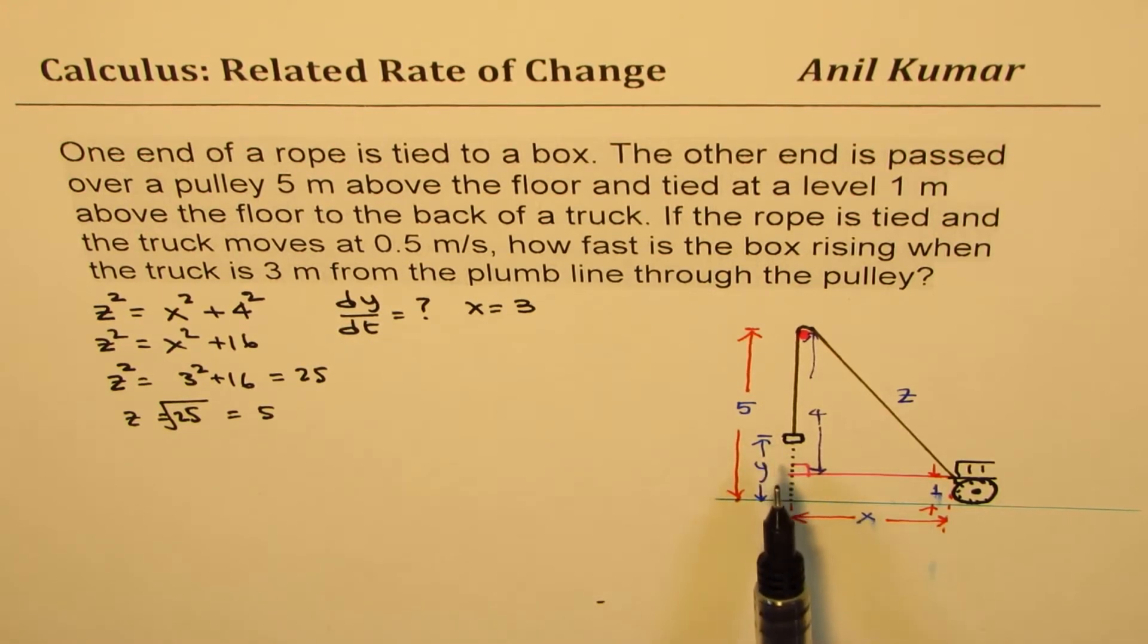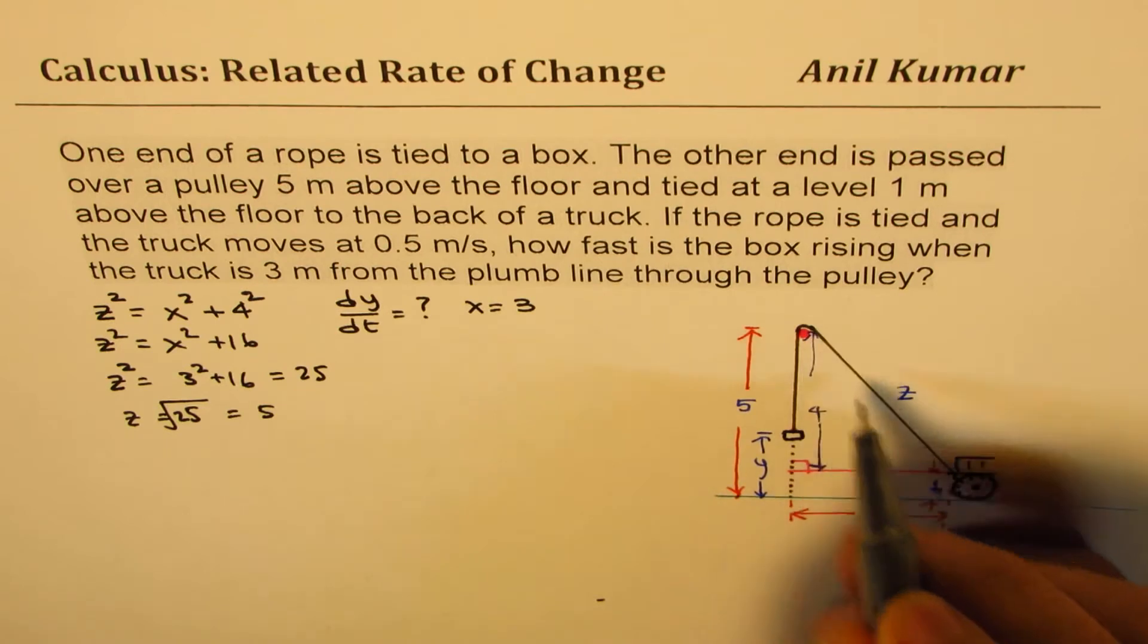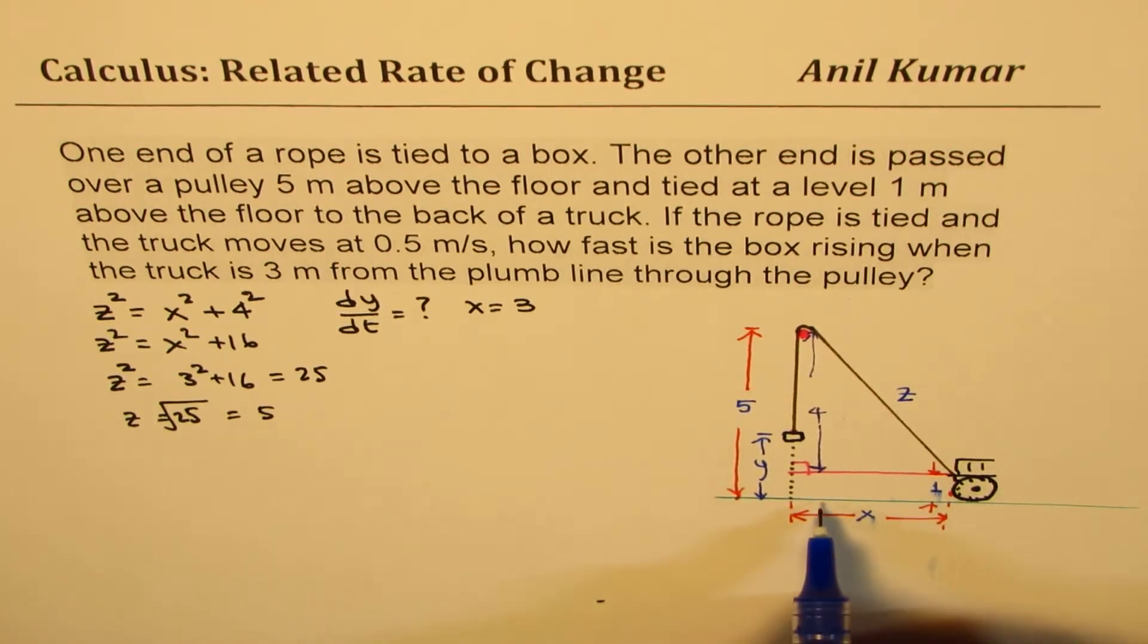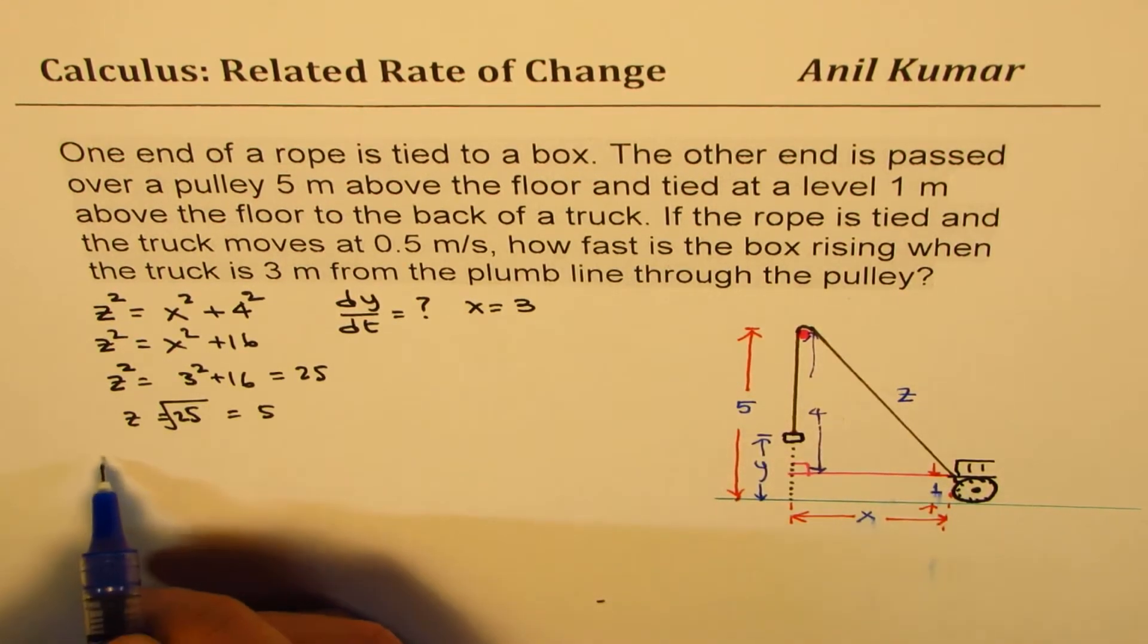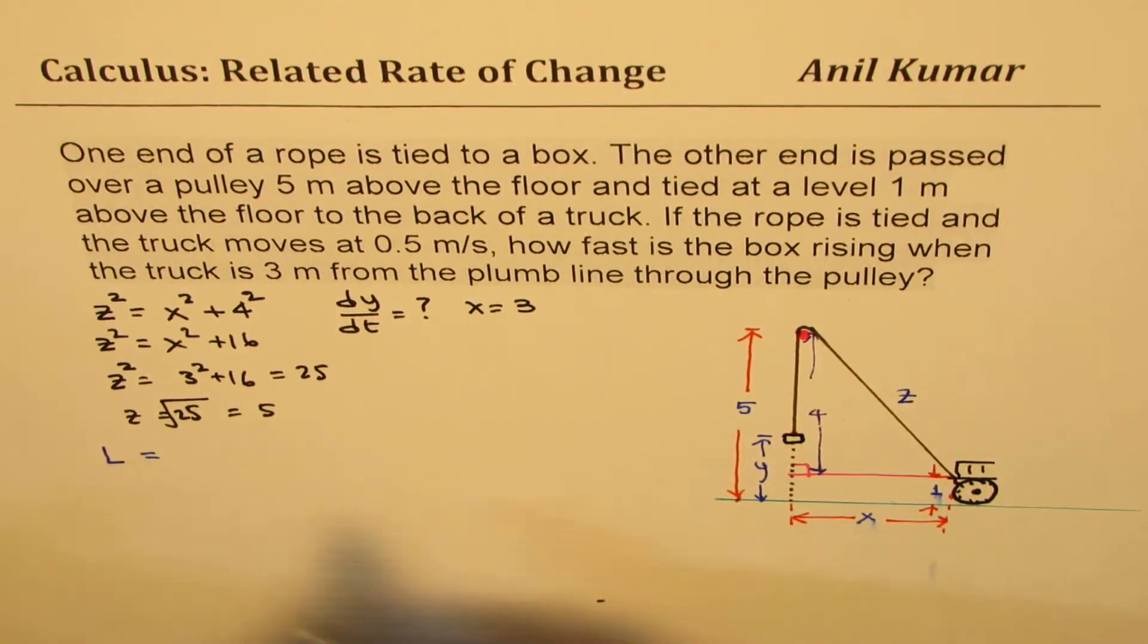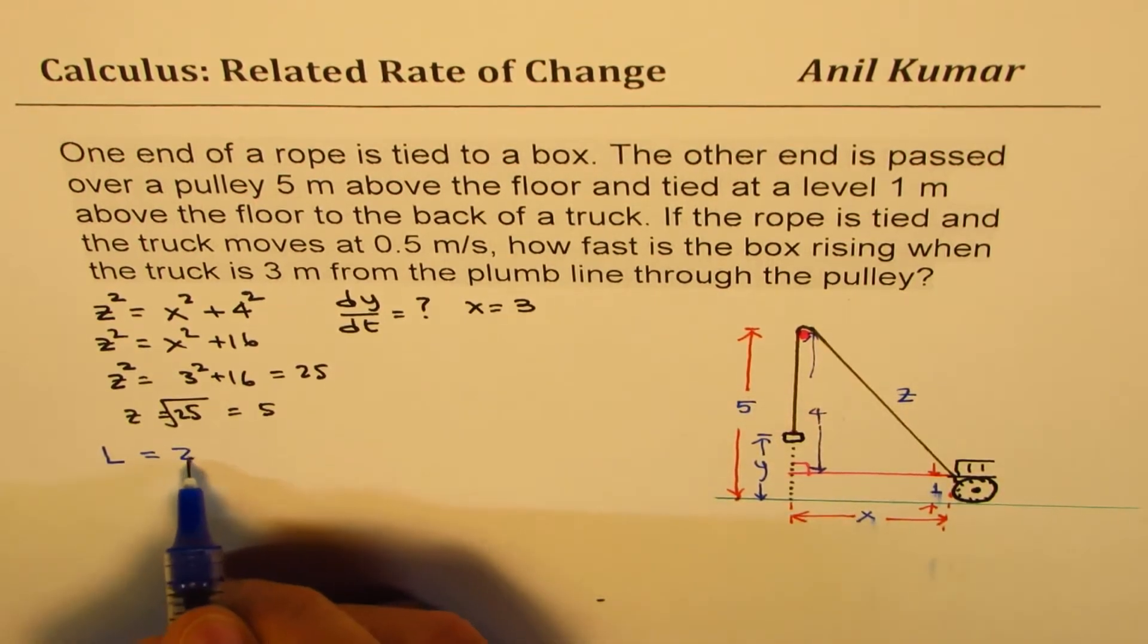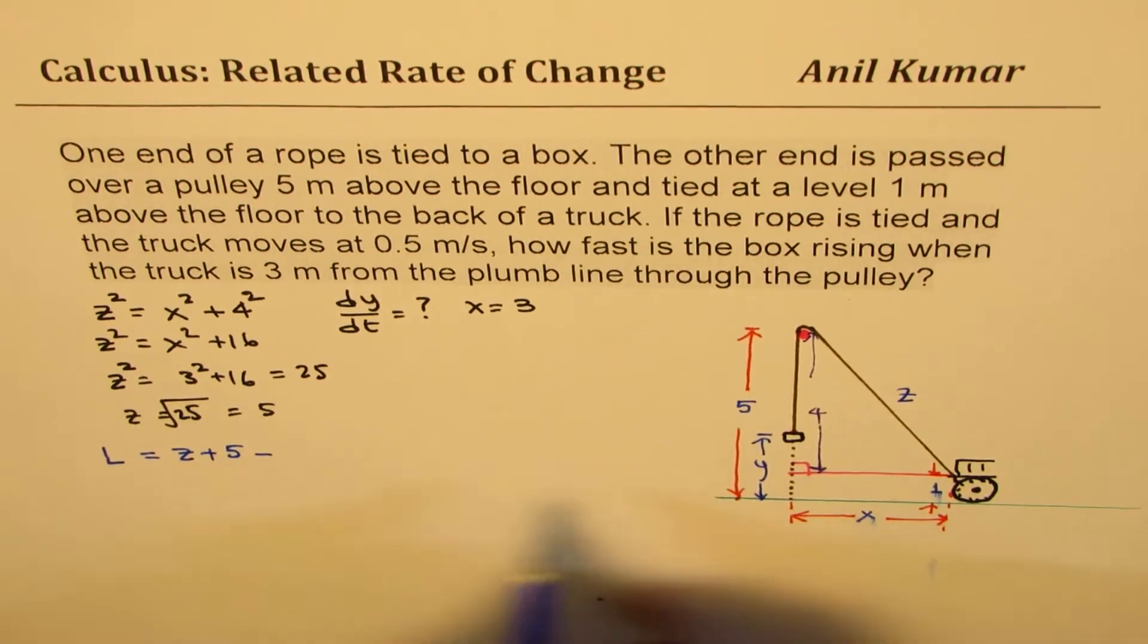Now, we can get this equation of Y by knowing the fact that this rope length is fixed. Whether the truck is in the initial position or wherever, this length is fixed. So we can say length of this rope is actually Z plus 5 minus Y.